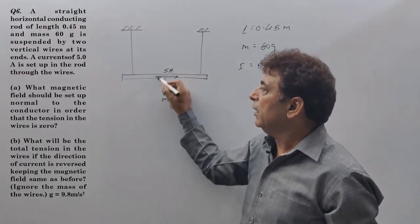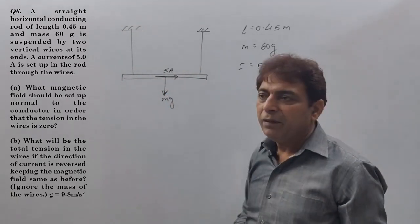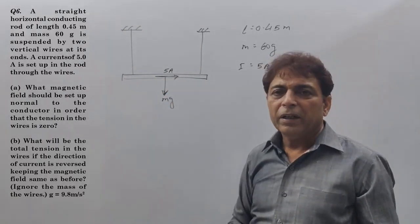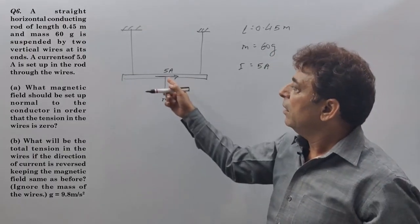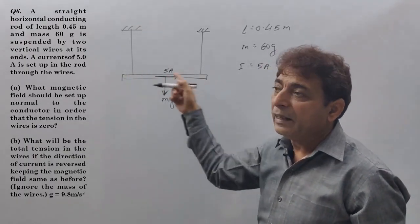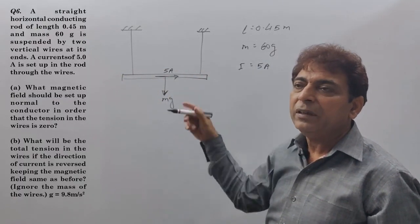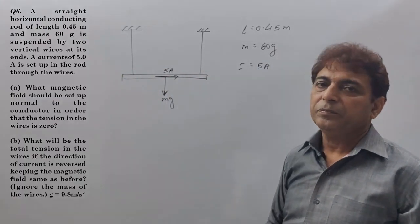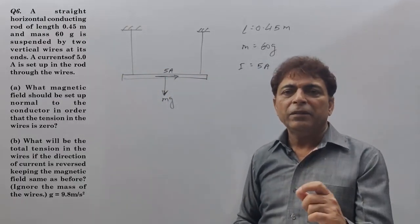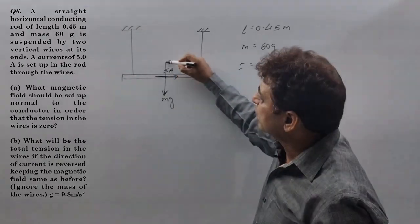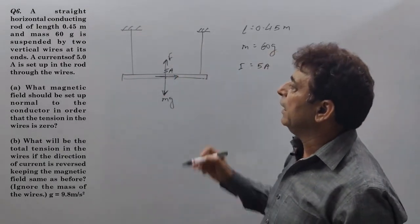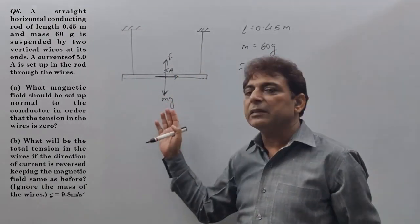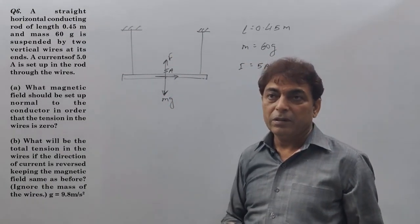We passed current of 5 ampere. If we apply a magnetic field, a current carrying conductor in a magnetic field experiences force. We should apply the field in such a way that the force acts in the upward direction and balances the weight. This is important.